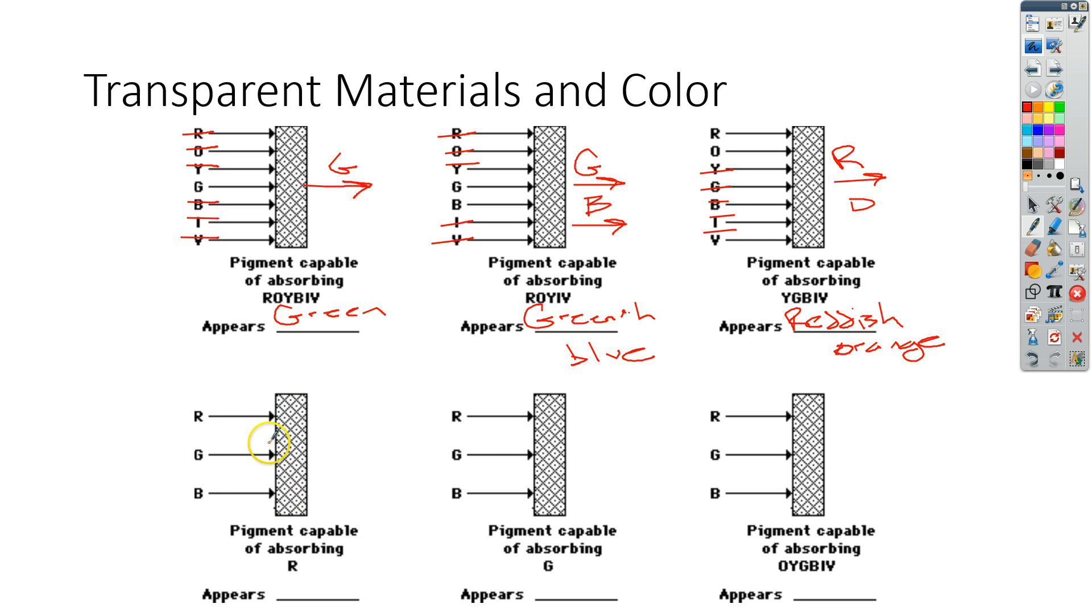Down on the bottom, we've made it a little bit easier here. We have just red, green, and blue. This one's capable of absorbing red. So the red gets stuck inside the glass. So this one is just going to be green and blue.